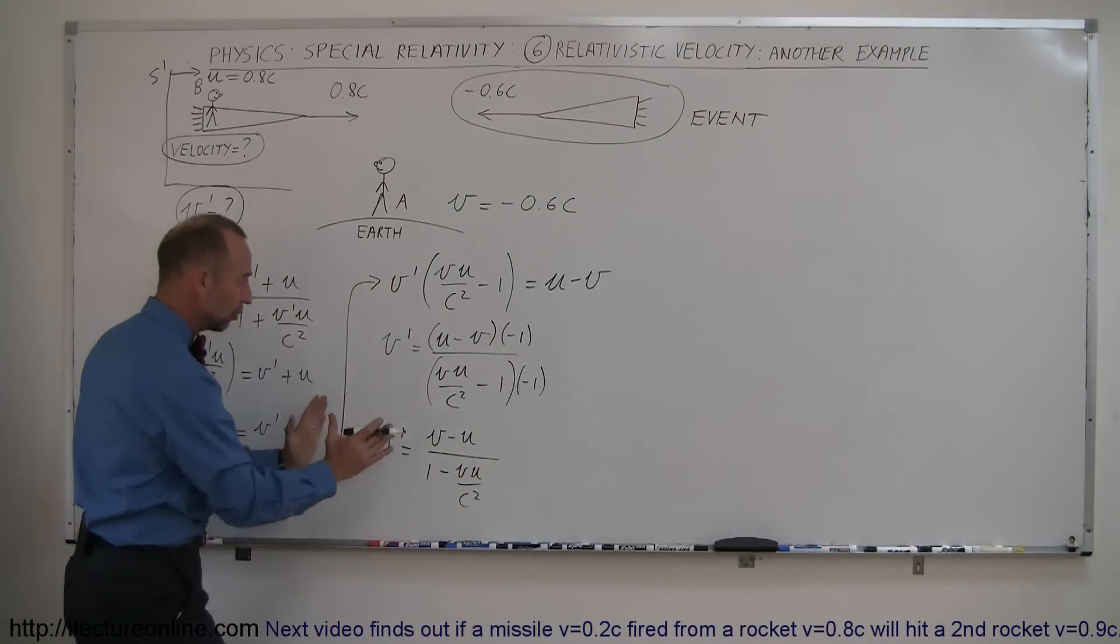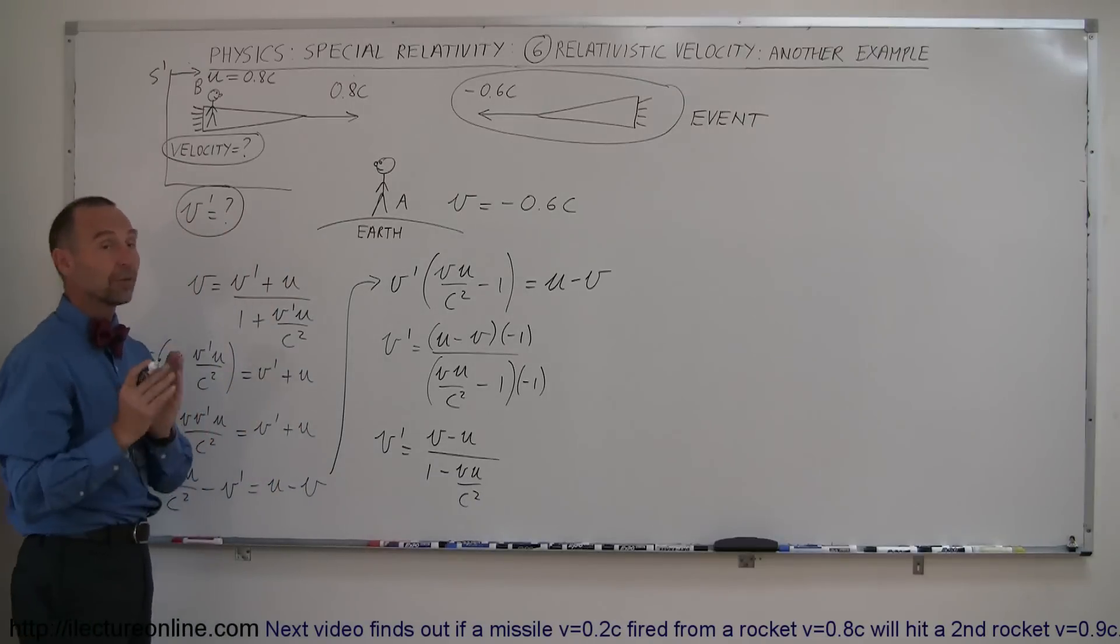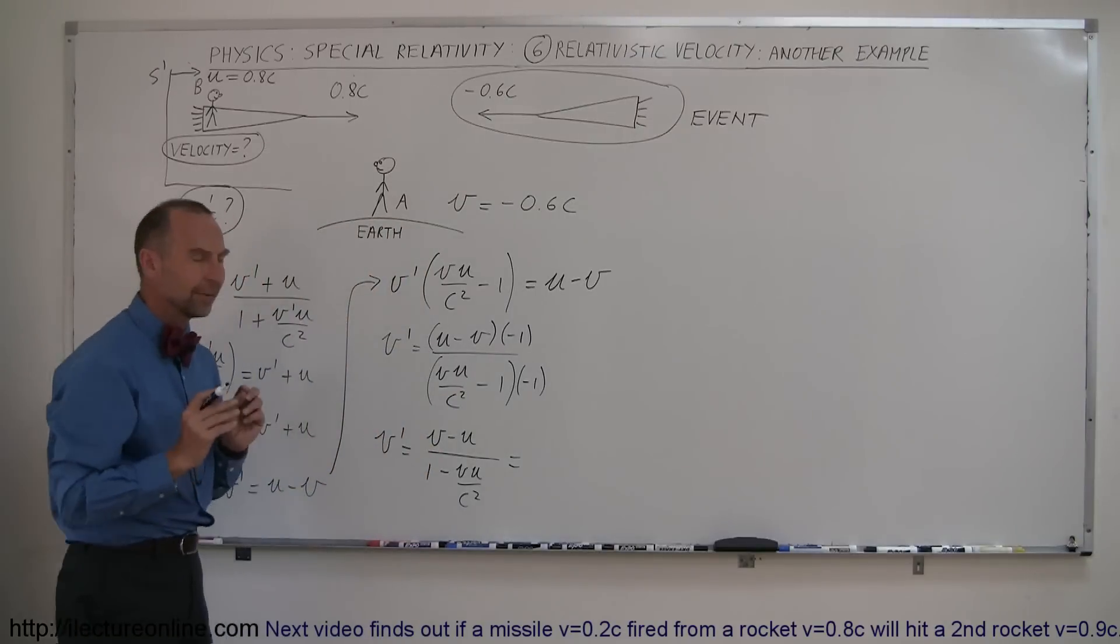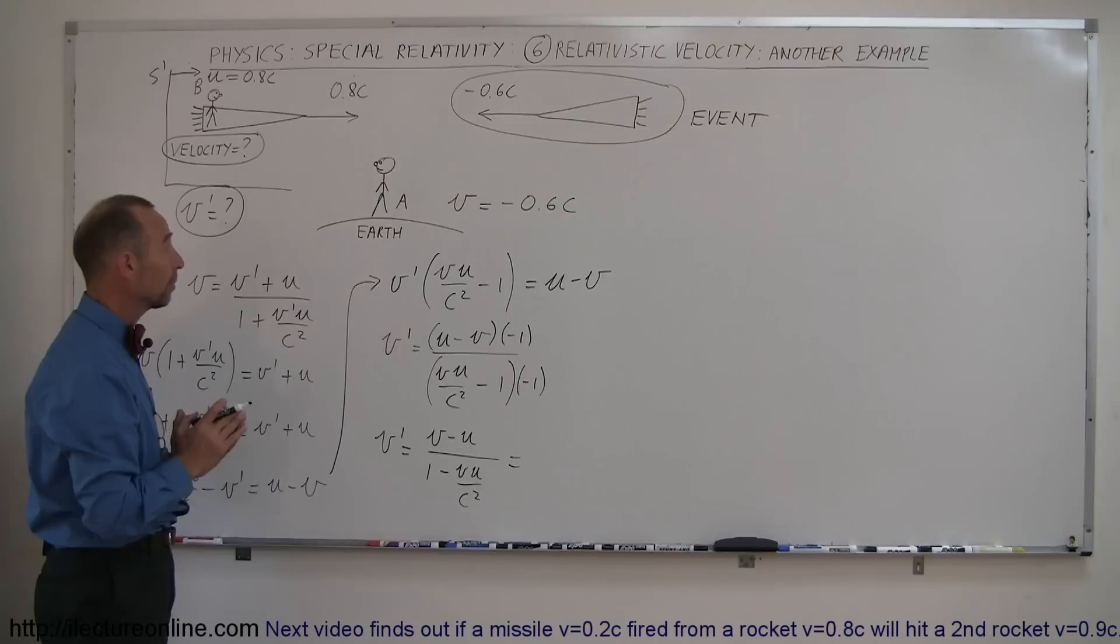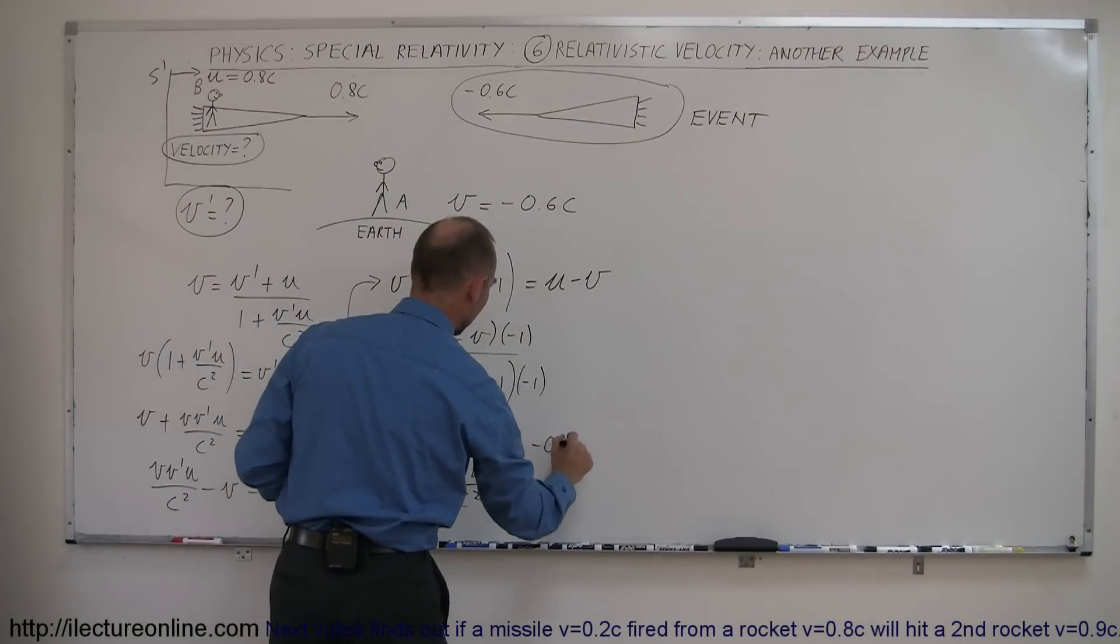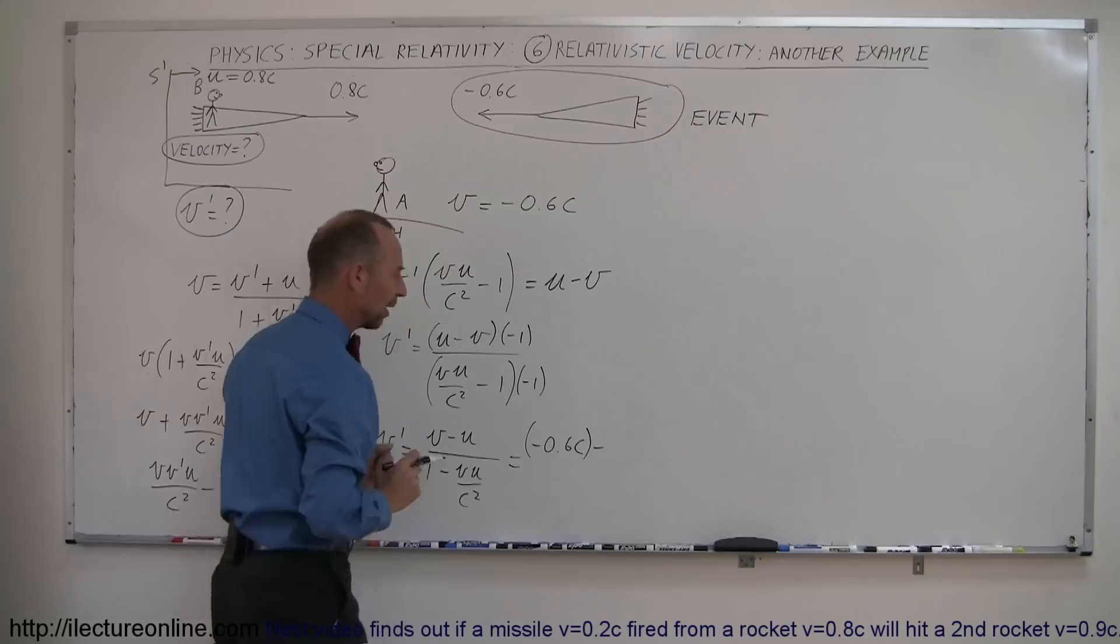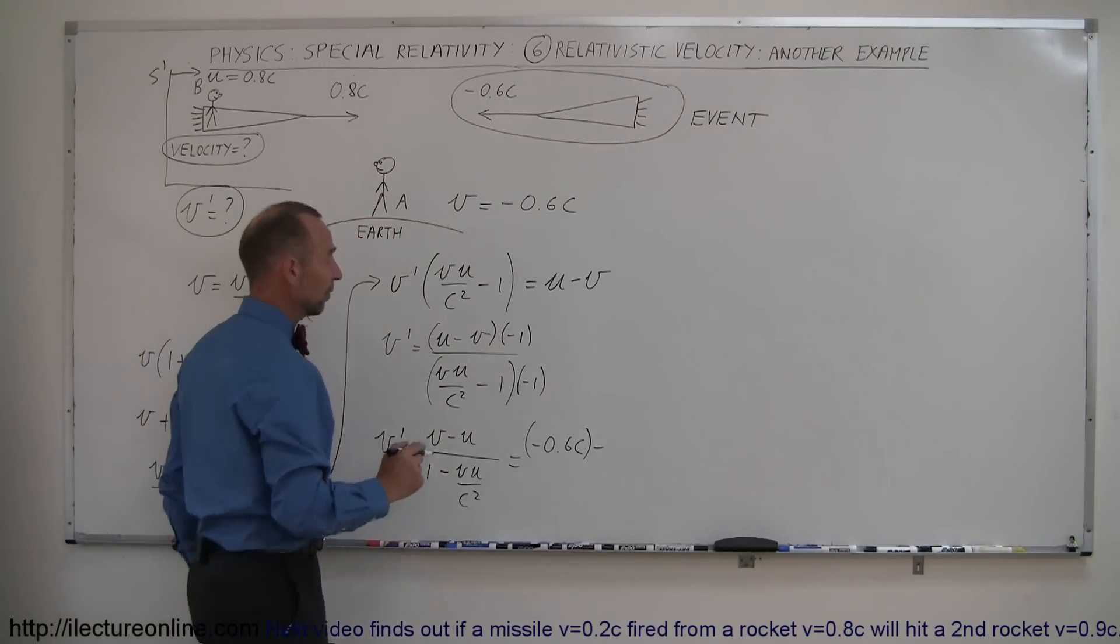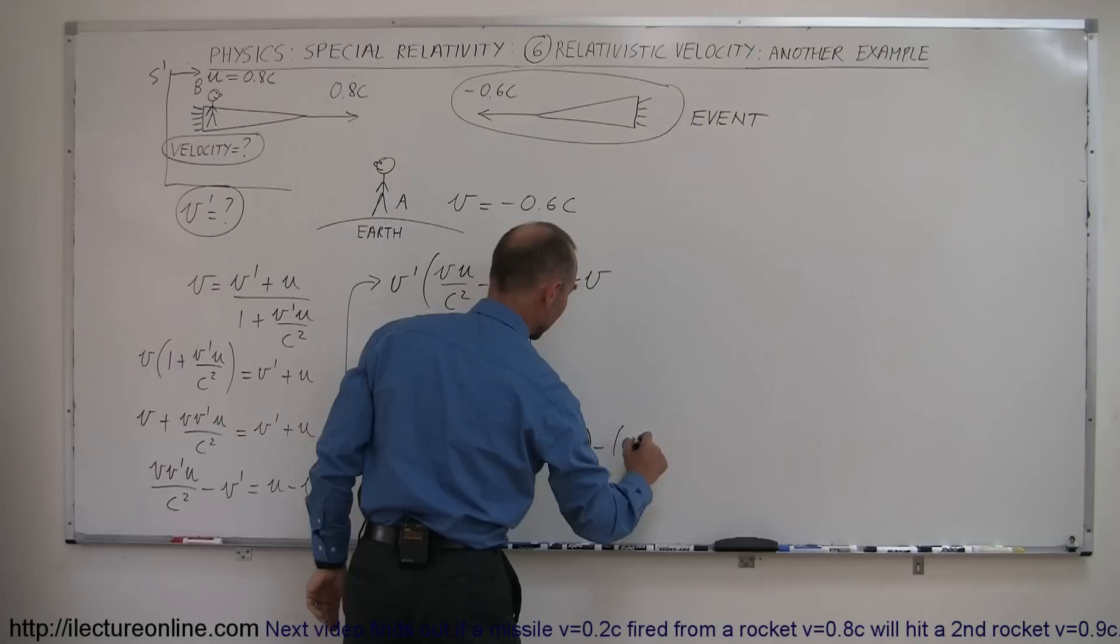Now we have this equation rearranged so we can solve for V', the velocity as seen by the moving observer. Now let's plug everything in. And remember that the direction is important, so signs are important. First of all, we have V, which is minus 0.6c. And we subtract from that, and I'll put parentheses around it so it's easier to see, the velocity of the moving reference frame, which is positive 0.8c.